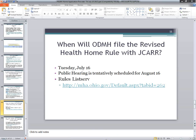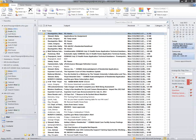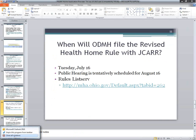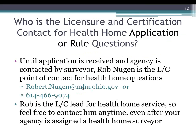The answer is we're looking for an organization-level agreement — that means from agency to agency, between your agency and an FQHC or primary care practice. You should not have an individualized agreement with every single primary care physician or provider at an FQHC or primary care practice. It should be between the organizations, not between individual providers and the health home.